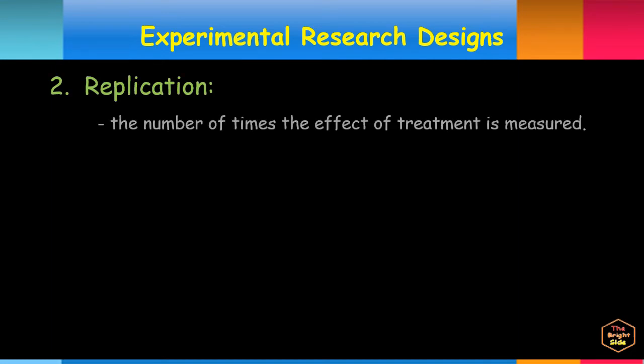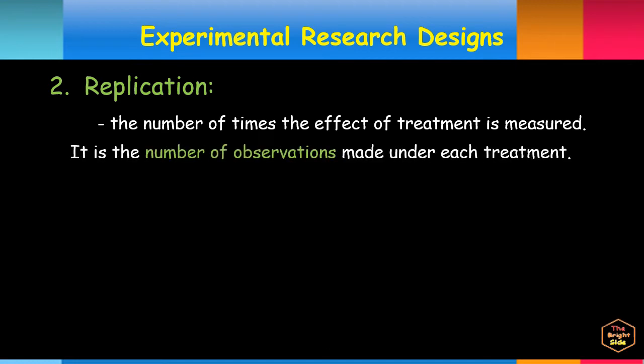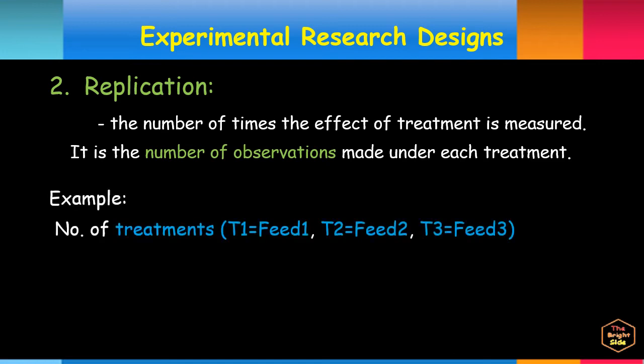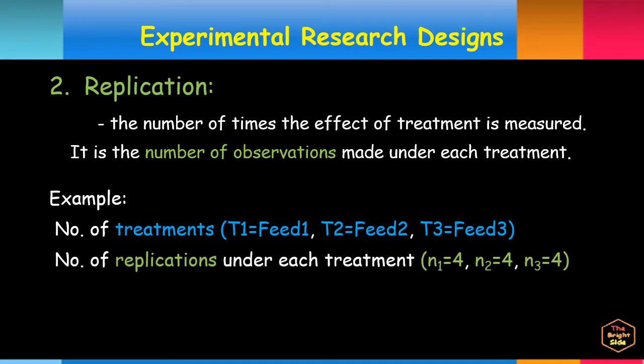Replication is the number of times the effect of treatment is measured. In other words, it is the number of observations made under each treatment. For example, there can be three different types of treatment: T1, T2, and T3. And for each of the treatment, there are four replications.